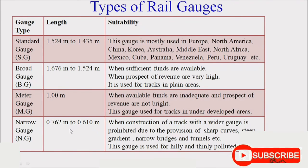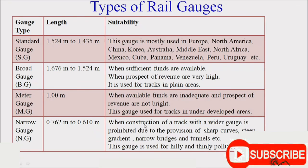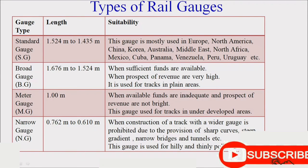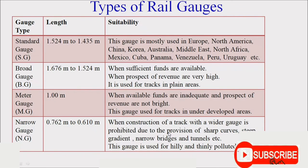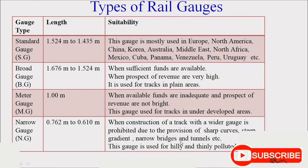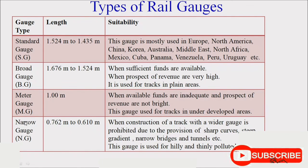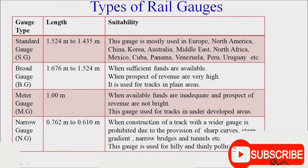Narrow gauge has a length of 0.610 m to 0.762 m. It is used when the construction of a track with a wider gauge is prohibited due to sharp curves, steep gradients, or narrow bridges and tunnels. These are the different types of rail gauges and their suitable applications.